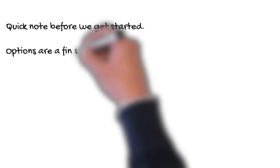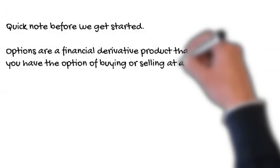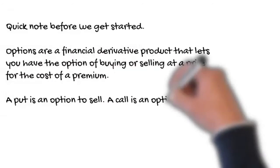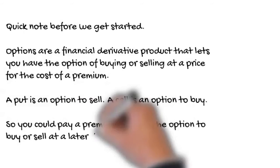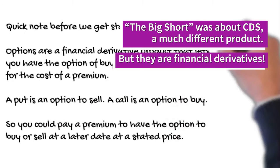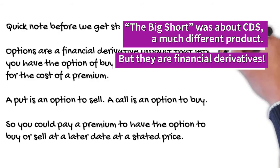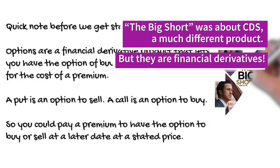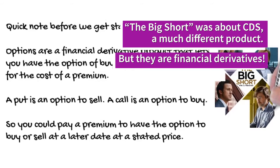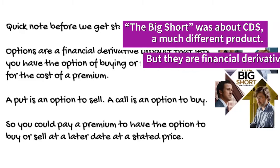Options are a financial derivative product that lets you have the option of purchasing or selling a commodity at a price at a later date for the cost of a premium. A put is an option to sell. A call is an option to buy. So you could pay a premium to have the option to buy or sell at a later date at a stated price.